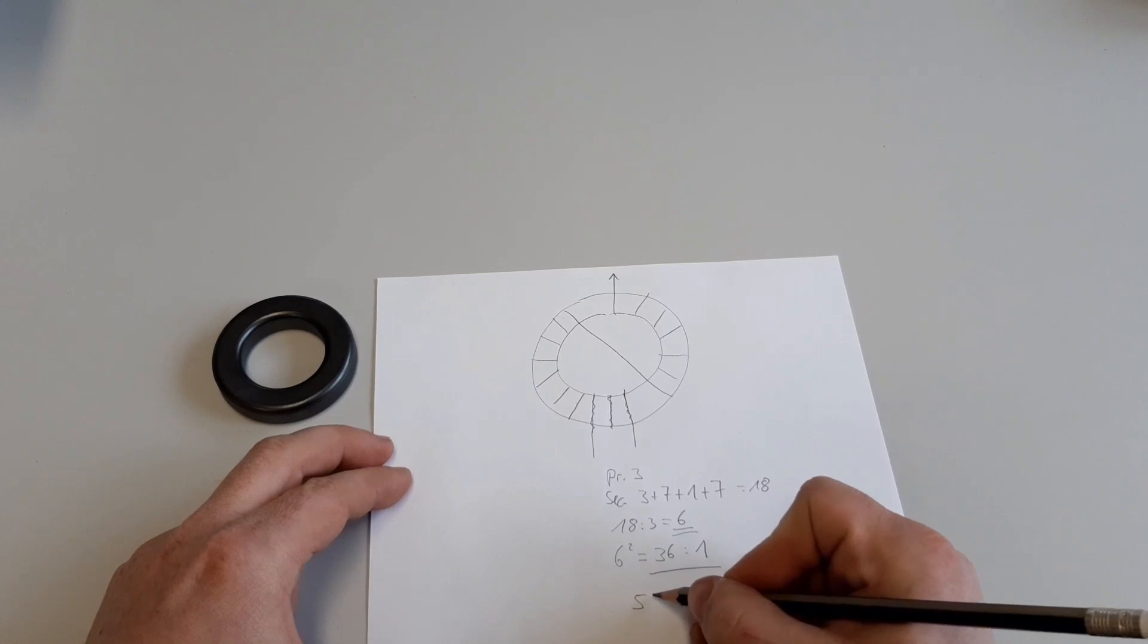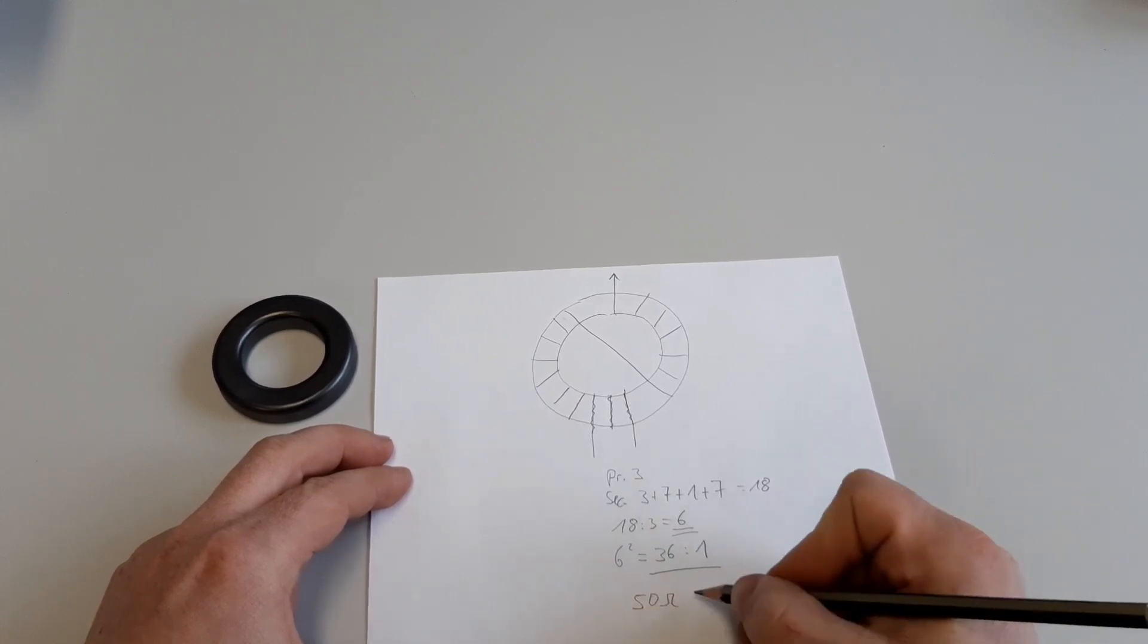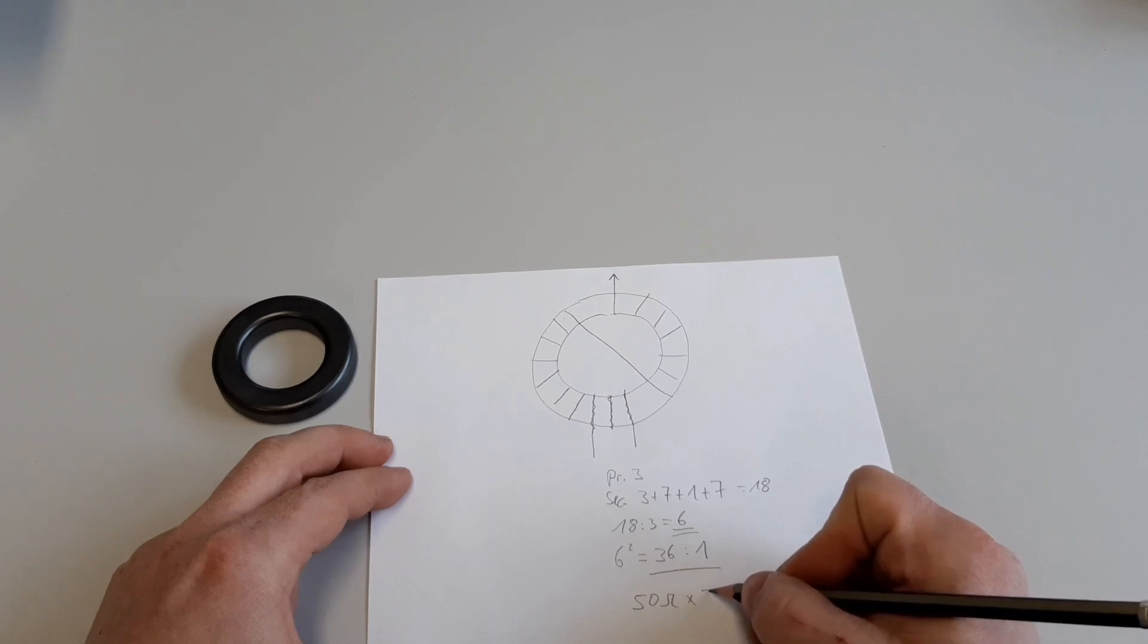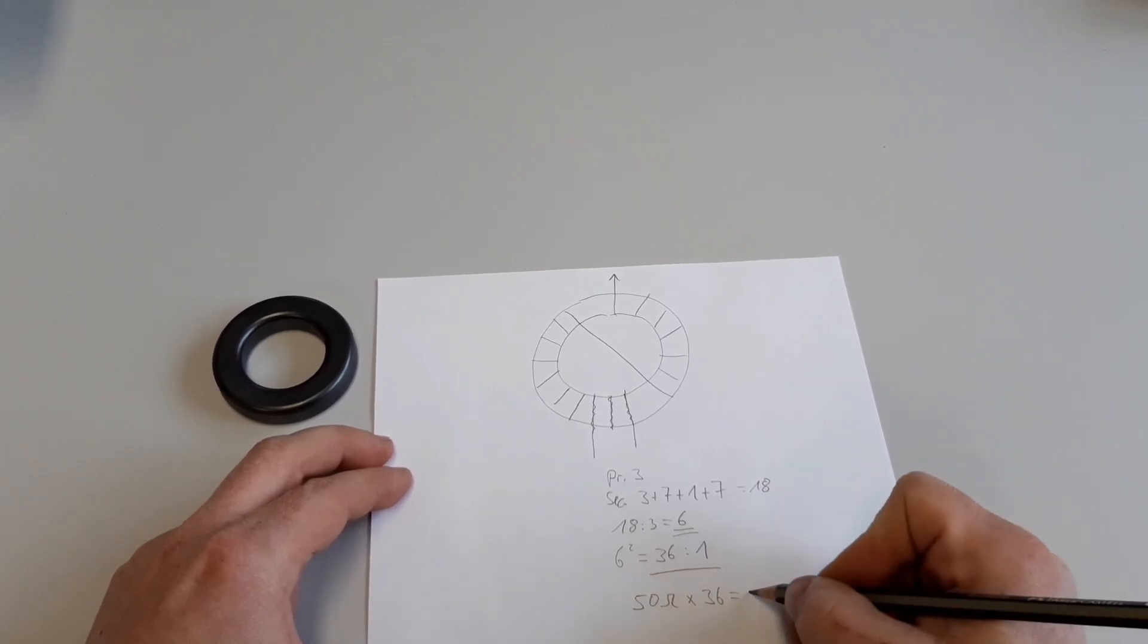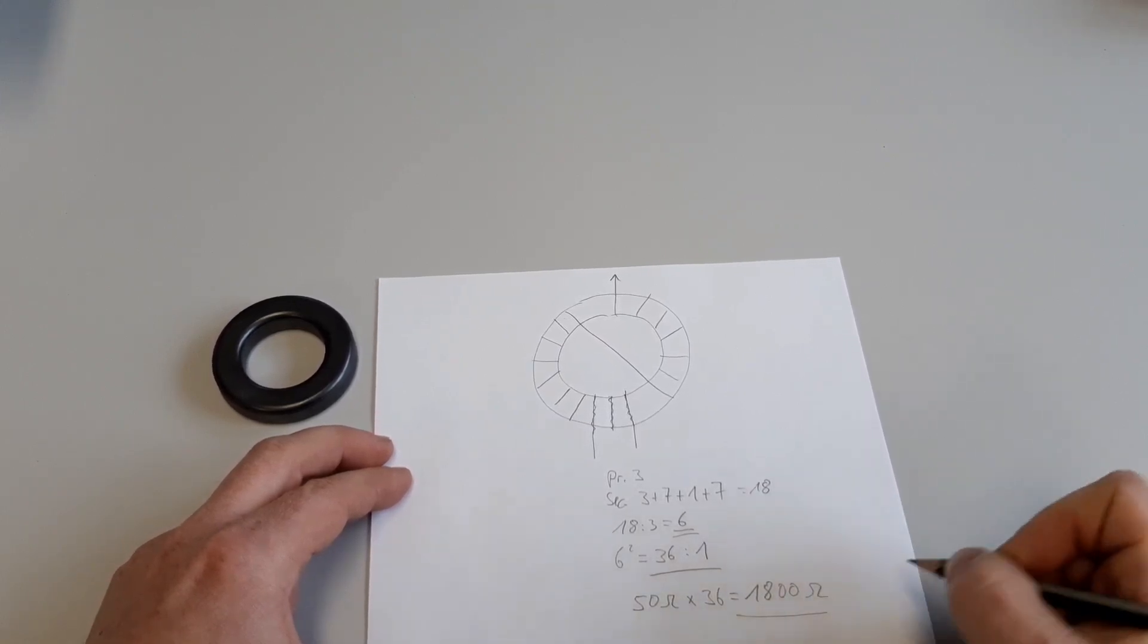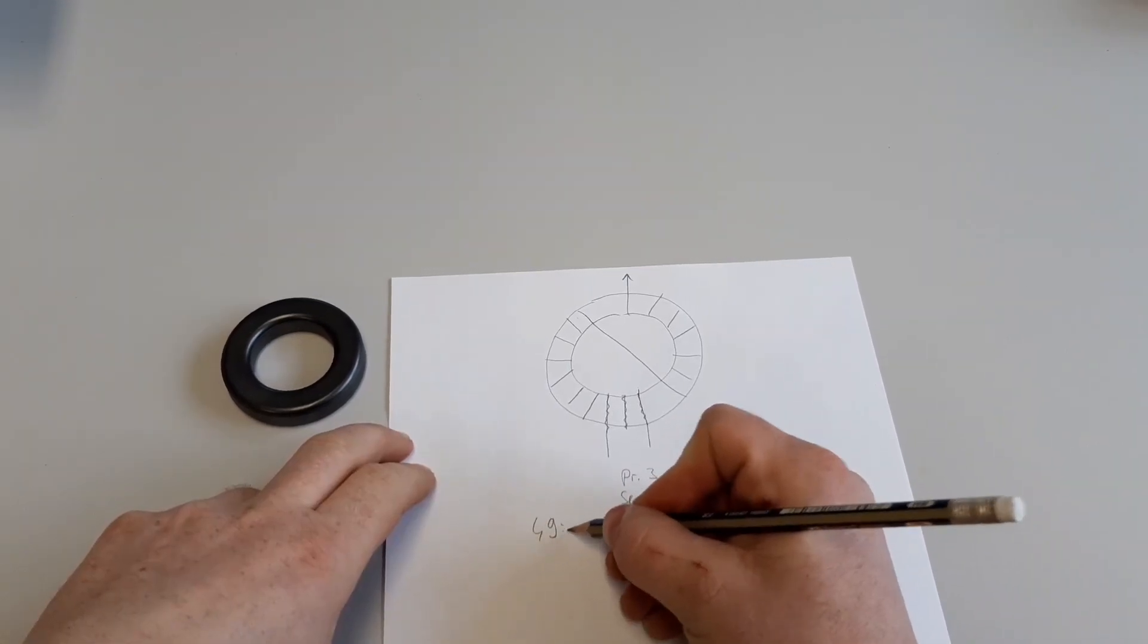And then if we have 50 ohm multiplied by 36, we have got 1800 ohm. That's our result, 49 to one.